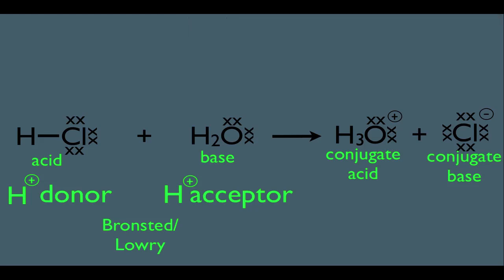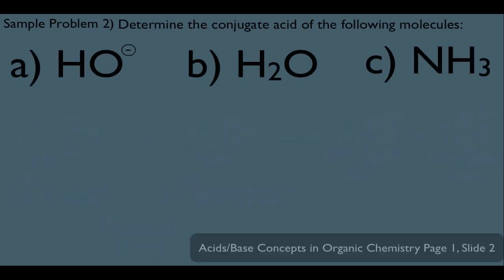Let's get down our first skill here. Sample problem: determine the conjugate acid of the following molecules. Starting with A, OH-: to turn it into a conjugate acid, we add a hydrogen or an H-plus. Adding an H-plus to OH- makes it H2O. Since it started out with a negative overall charge, adding plus one to negative makes it overall neutral.